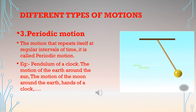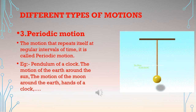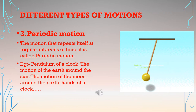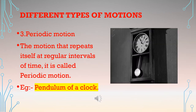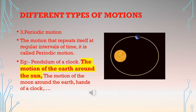The third type is periodic motion — the motion that repeats itself at regular intervals of time. Examples include the pendulum of a clock making to-and-fro motion at regular intervals, the motion of the earth around the sun, and the motion of the moon around the earth. Both are periodic because they repeat at regular intervals of time.